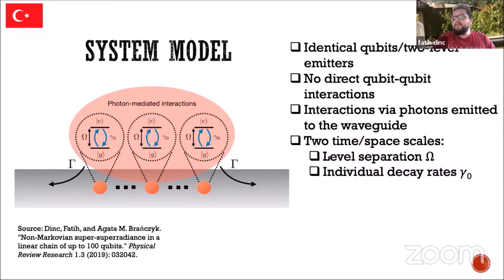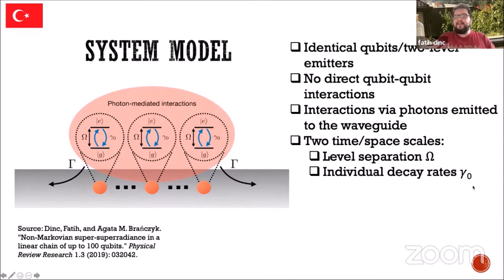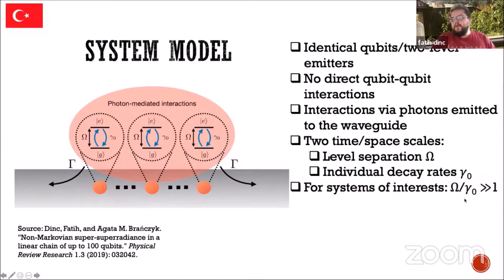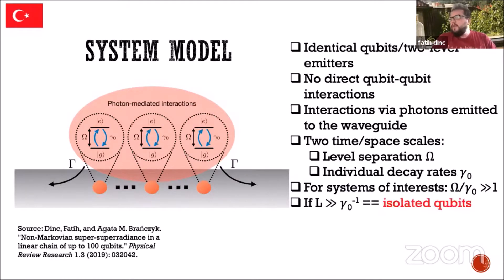There are two time scales. One is the level separation or resonance frequency, which is a very short time scale or very high frequency scale. The other is the decay rates, which are longer time scales where the action happens — basically the time scale we are interested in, and then there are also much lower frequency scales. Experimentally, omega is around gigahertz and gamma naught is around megahertz. For the systems of our interest, omega is going to be much larger than gamma, which means the pulse is interacting in a very narrow bandwidth.